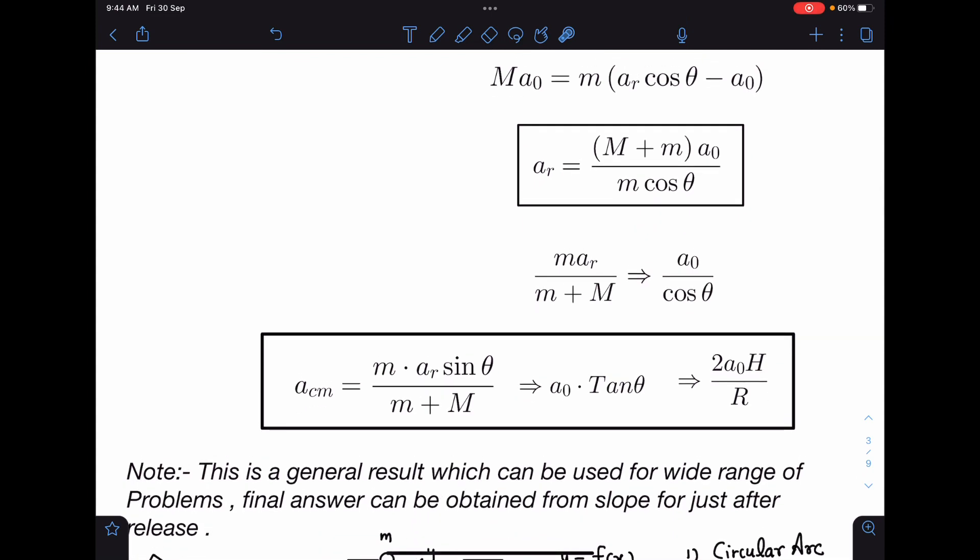Now what kind of questions we can solve by using this? This is a general result which can be used for wide range of problems. Final answer can be obtained from the slope for just after release. If we are taking initial velocity, then radius of curvature will play a role and things will get complicated.